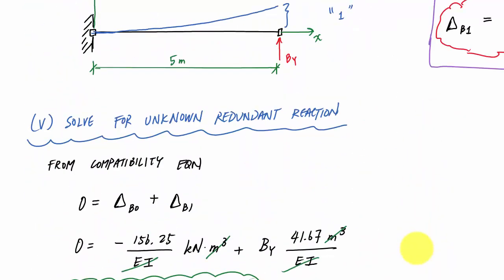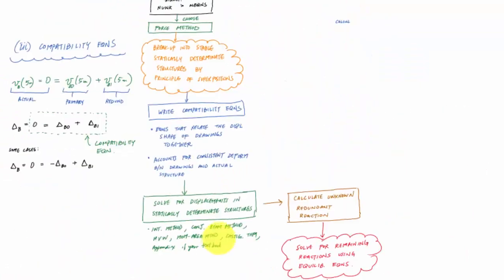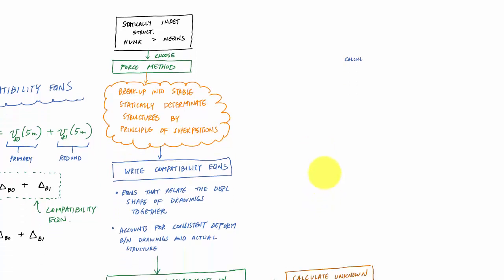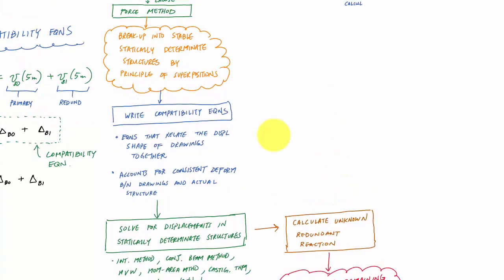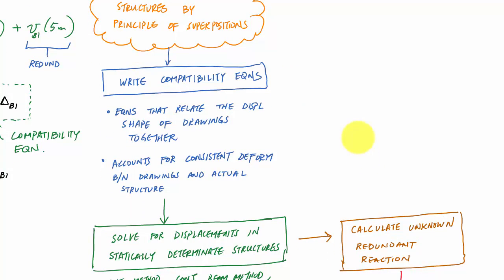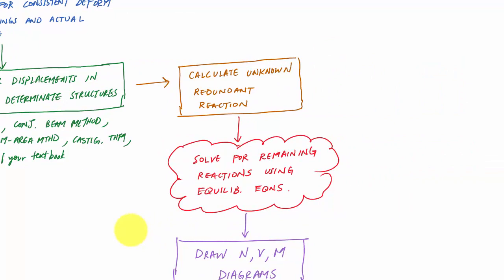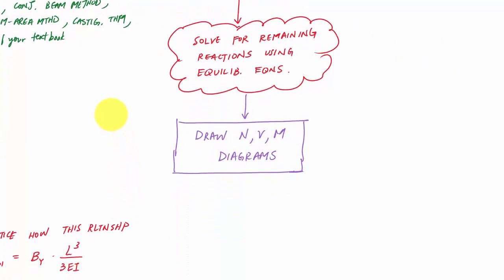So to recap, we just solved this and went through a detailed explanation of everything. So this is what we did. We took a statically indeterminate structure. We chose to use the force method. We broke it up into stable, statically determinate part using the principle of superposition. We chose a redundant reaction. That was kind of an important part of that process. We wrote out the compatibility equations. And then to relate these drawings together, we solved for displacements using methods that we had learned or the appendix of your textbook. And then, you calculated that unknown redundant reaction. Everything else was just solving and plugging and chugging. Solving for the remaining reactions using equilibrium equations. And then, drawing the normal shear and moment diagrams. Did you ever think when you were taking statics that calculating the reactions and drawing normal shear and moment diagrams would be the easy part? You're welcome. All right. Take it easy. Let me know if you have any questions. Structure free.